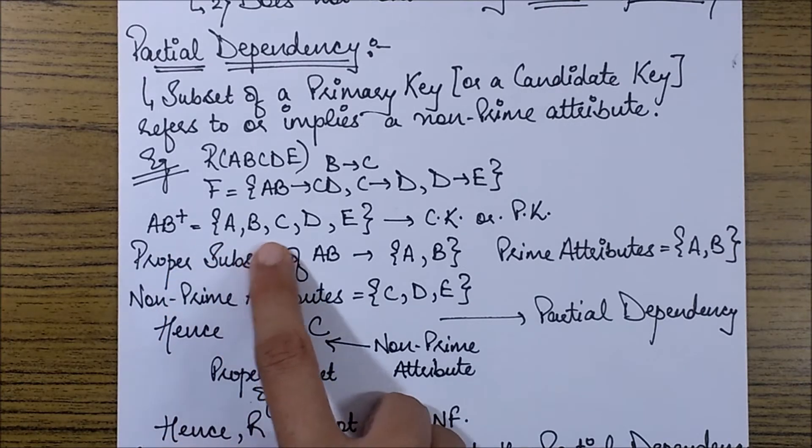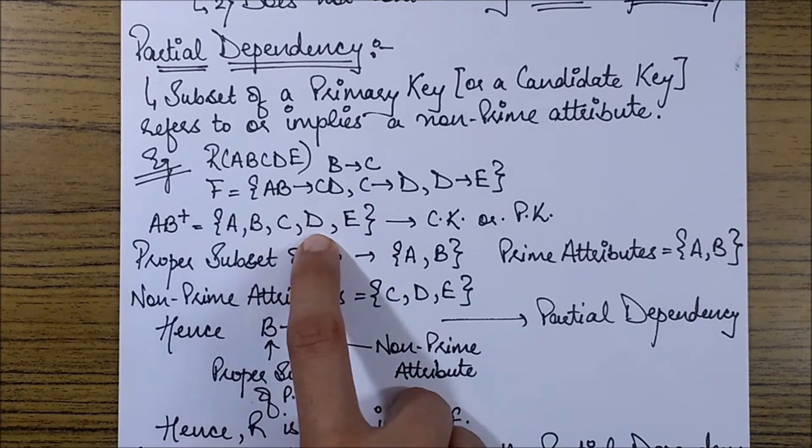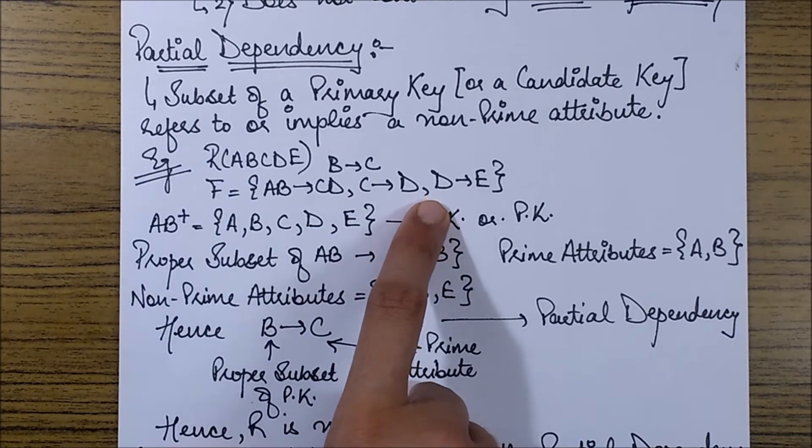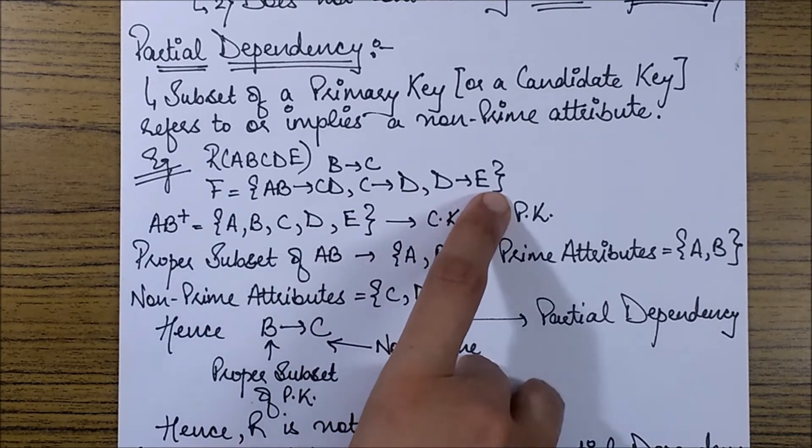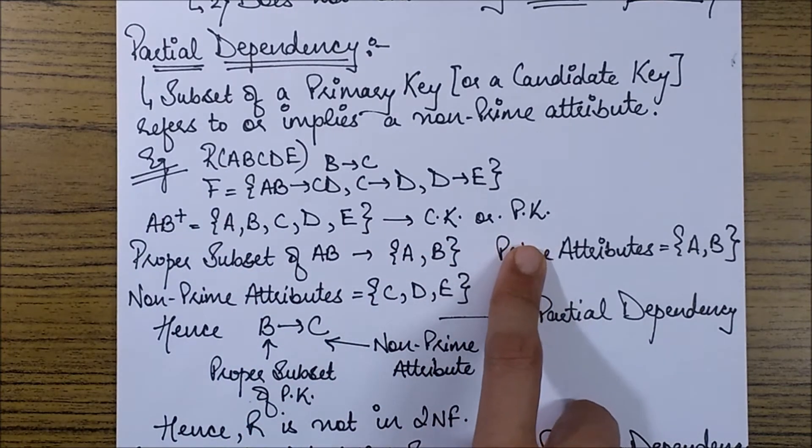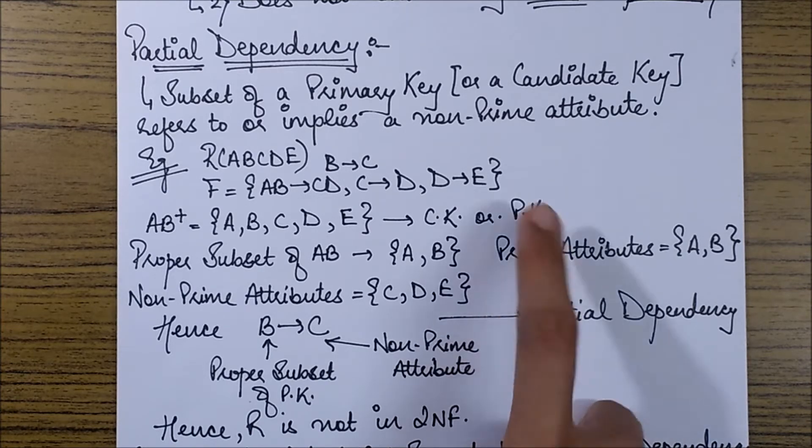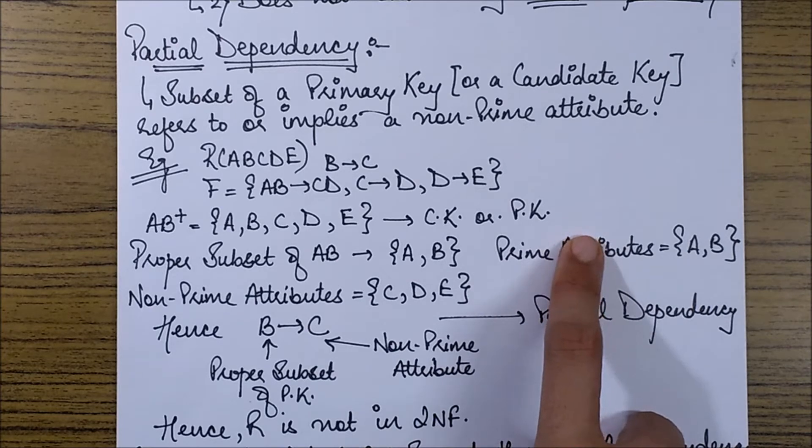So A, B closure gives A, B then the attributes reachable from A, B, C, D. And from C I am going to get D and from D I am going to get E. So this basically forms our candidate key or primary key. You can also see that there is no other combination which yields all the attributes.